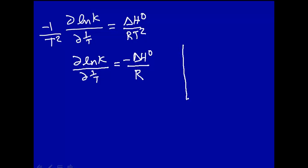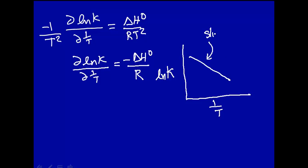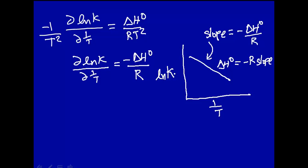In other words, if you measure the equilibrium constant as a function of 1/T and plot ln K versus 1/T, you'll get some data, and the slope will be equal to -ΔH0/R. So ΔH0 = -R times the slope of this line. This is a way to get the standard enthalpy change for a reaction — just measure the equilibrium constant as a function of temperature.